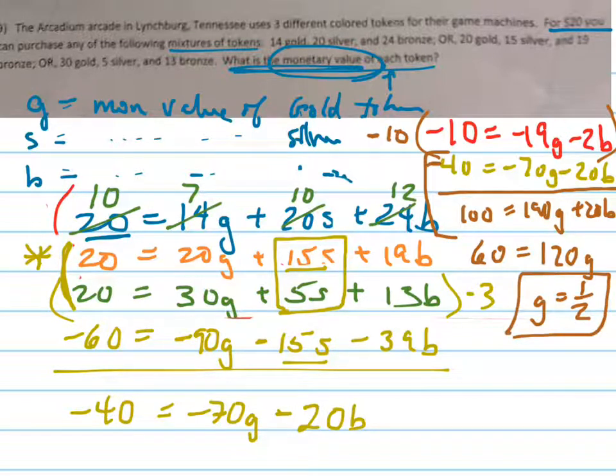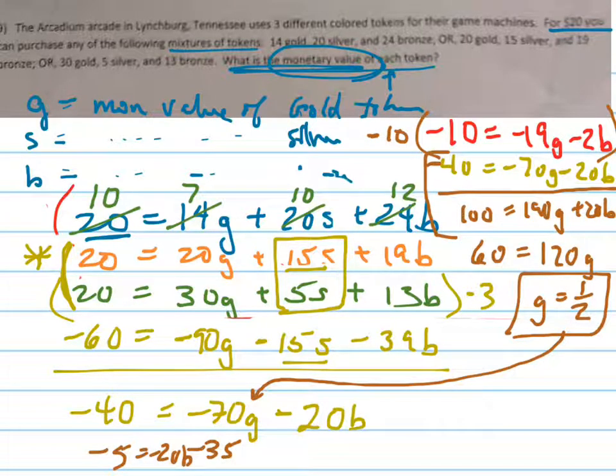There's my G. And now I go ahead and plug them back in and solve for the other ones. If G is 1 half, then this becomes negative 35. If I add 35 to the other side, this becomes negative 5 equals negative 20B. So B equals negative 5 over 20, which is positive 1 fourth. It can't be negative, really. It's positive 1 fourth. I'm so confused. I don't know what I did wrong.